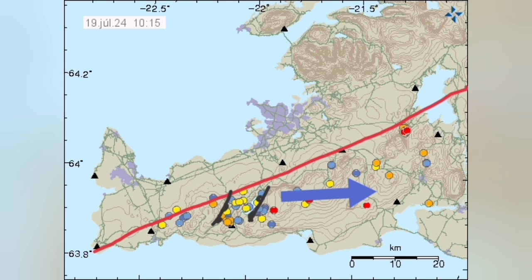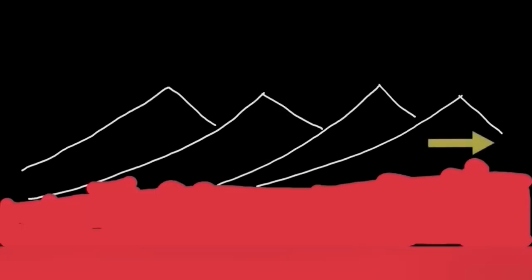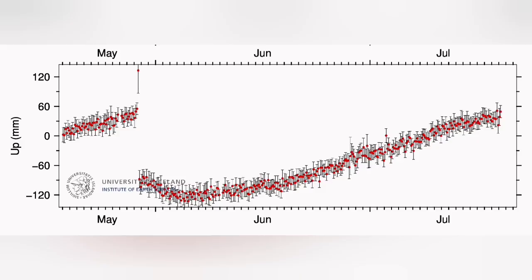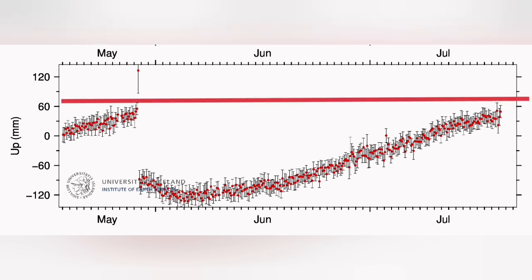As it moves and pulls, it practically rips the ground — the earth's crust — and creates what we call a rift. This rift is the location of these eruptions. Over time, as the rift moves and ripping progresses from one point to the next, eruptions happen in sequence — from the first to the second and the third. These are the volcanic systems in that area.